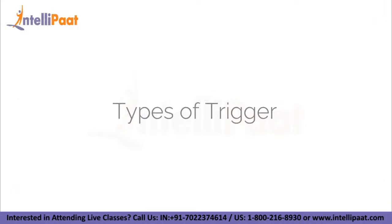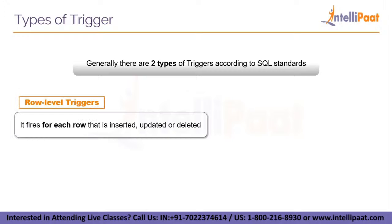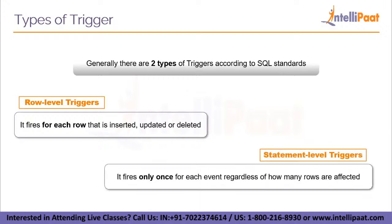Moving on to the types of triggers — there are two types according to SQL standards. The first type is the row-level trigger, which fires for each row that is inserted, updated, or deleted. INSERT, UPDATE, and DELETE are DML — Data Manipulation Language — statements. Row-level triggers are made for DML statements only. The second type is the statement-level trigger, which fires only once for each event regardless of how many rows are affected. To clearly understand this, let me give one example for each type.